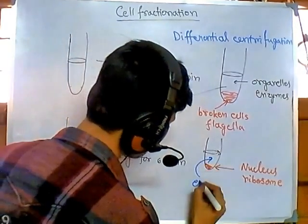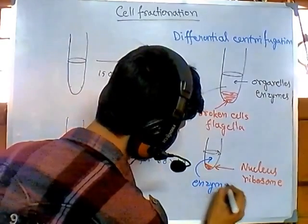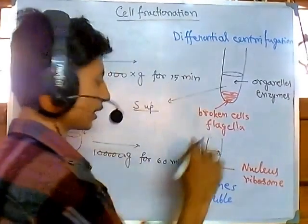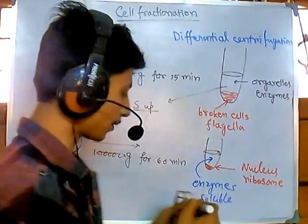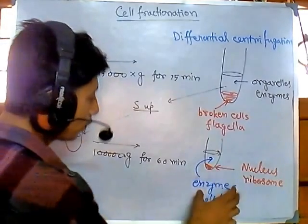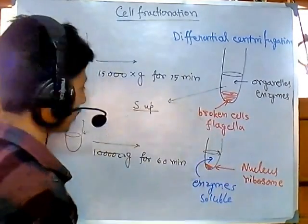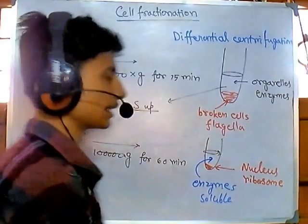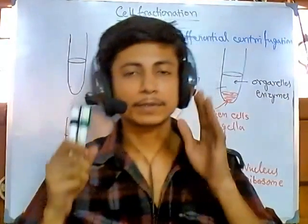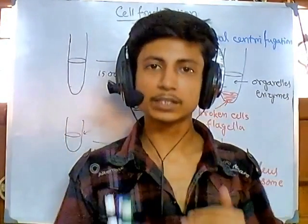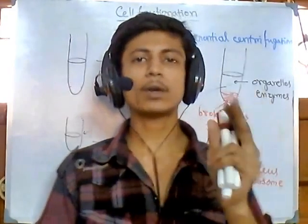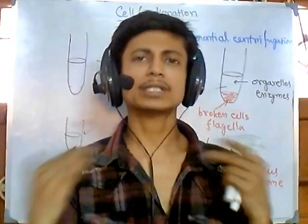In this pellet from the 100,000 G spin, we have the heavier organelles — nucleus, ribosomes, and similar components. In the supernatant remaining above, we still have very small materials, which are soluble enzymes. So we have precipitated out nuclear material and ribosomes, but soluble enzymes are still present in the supernatant.